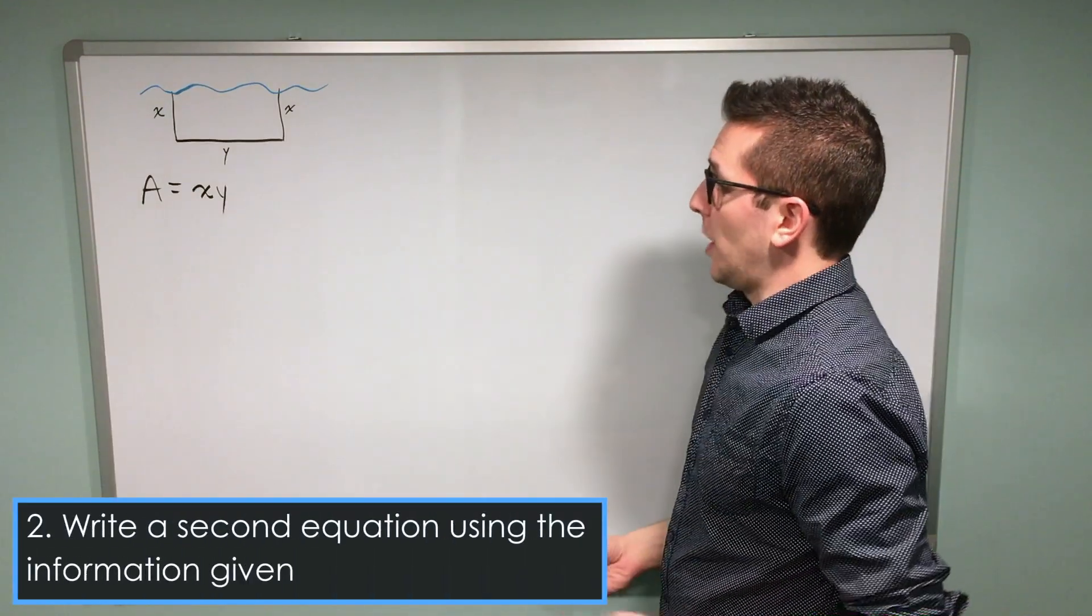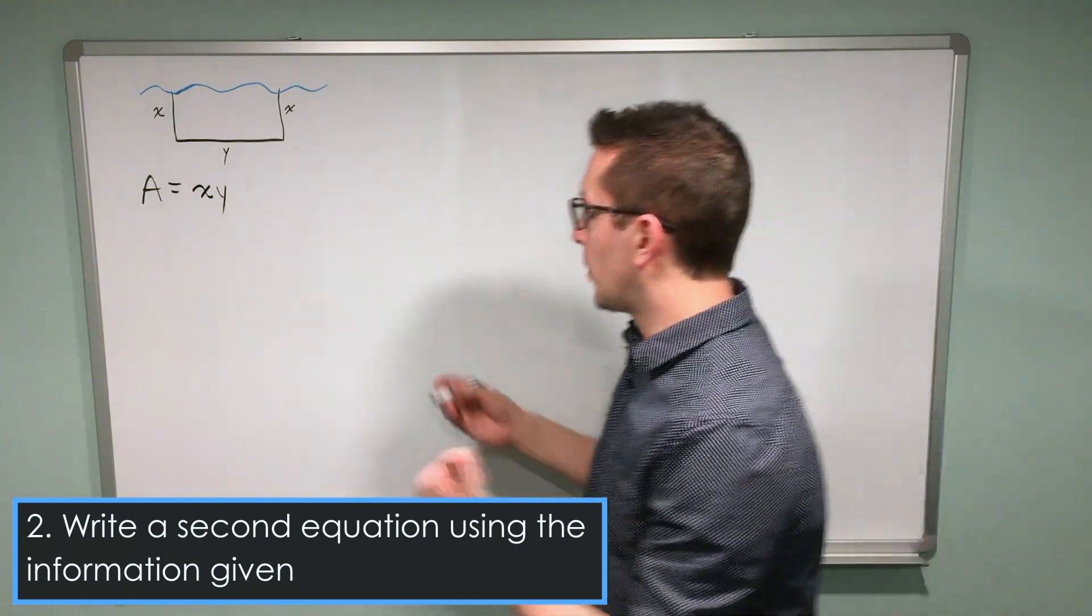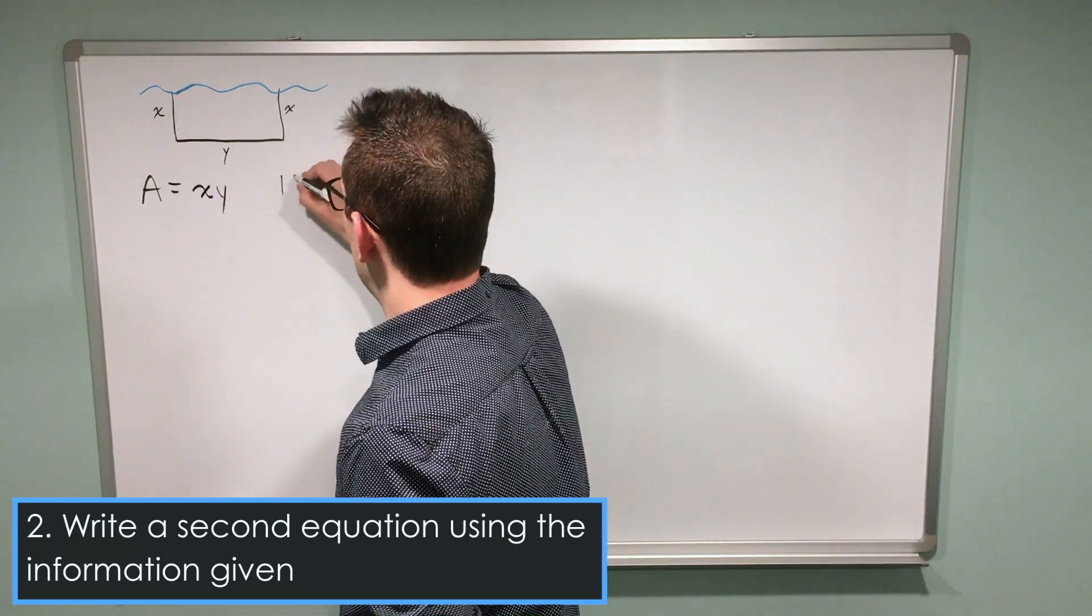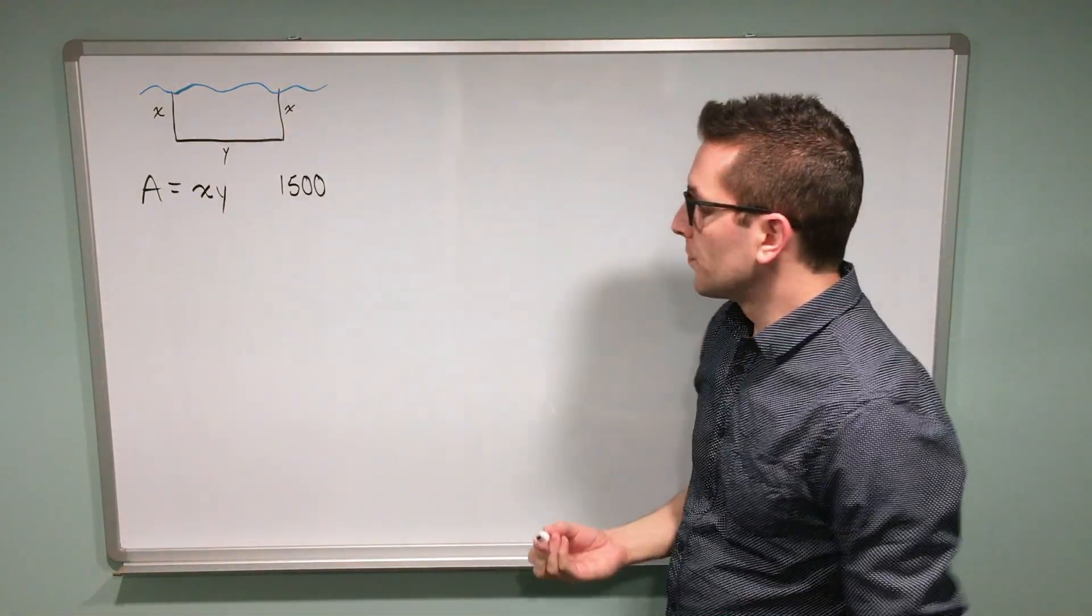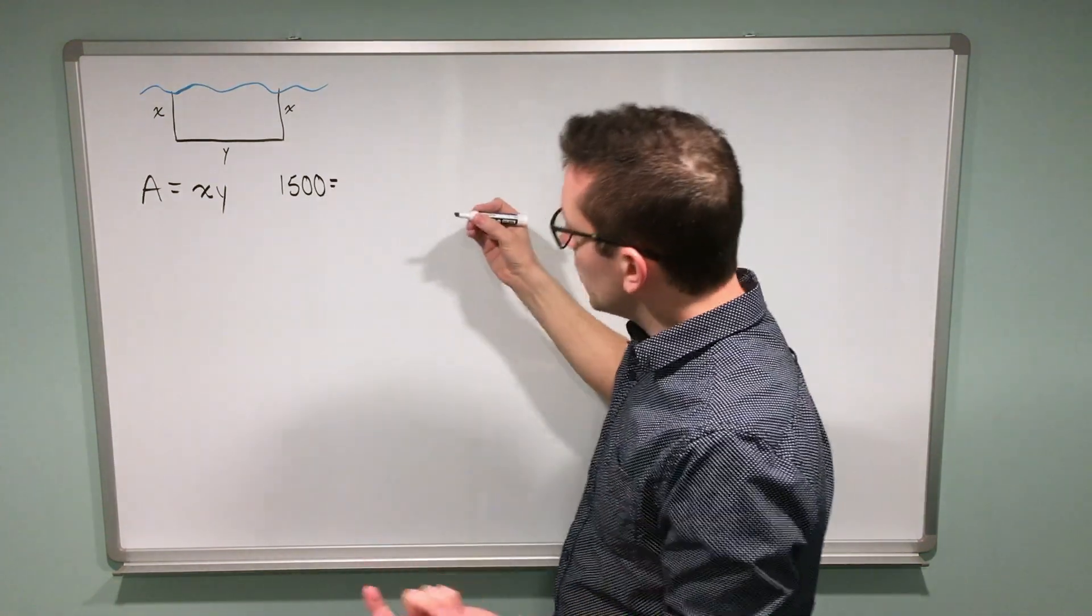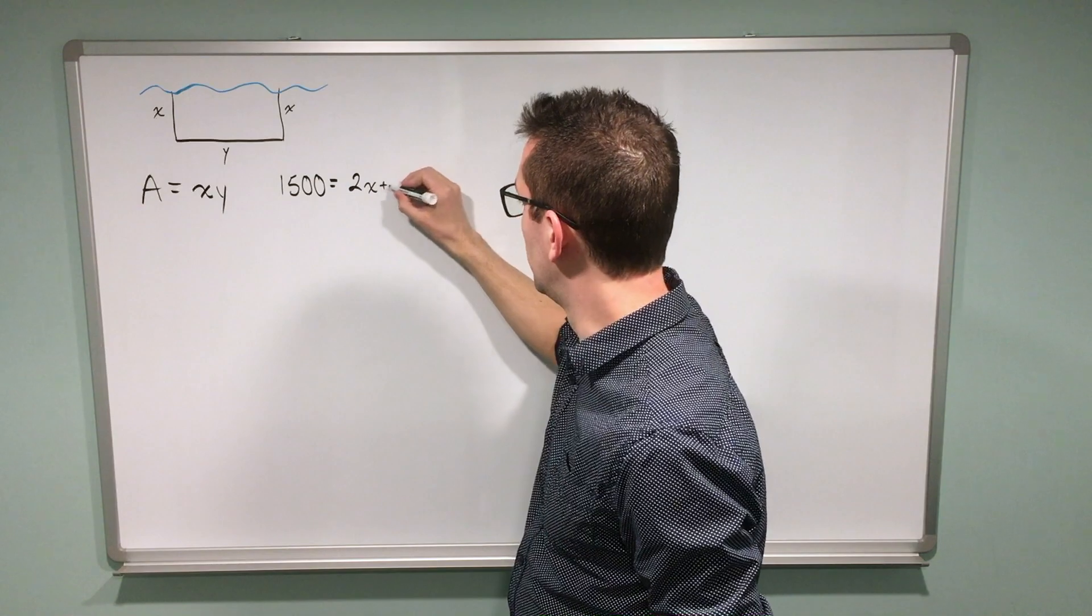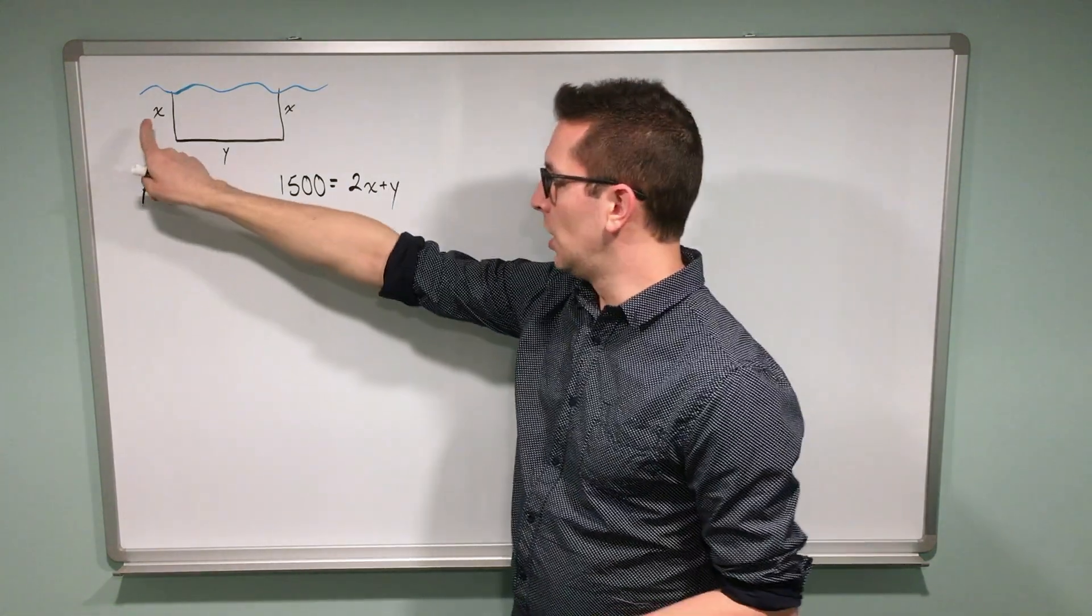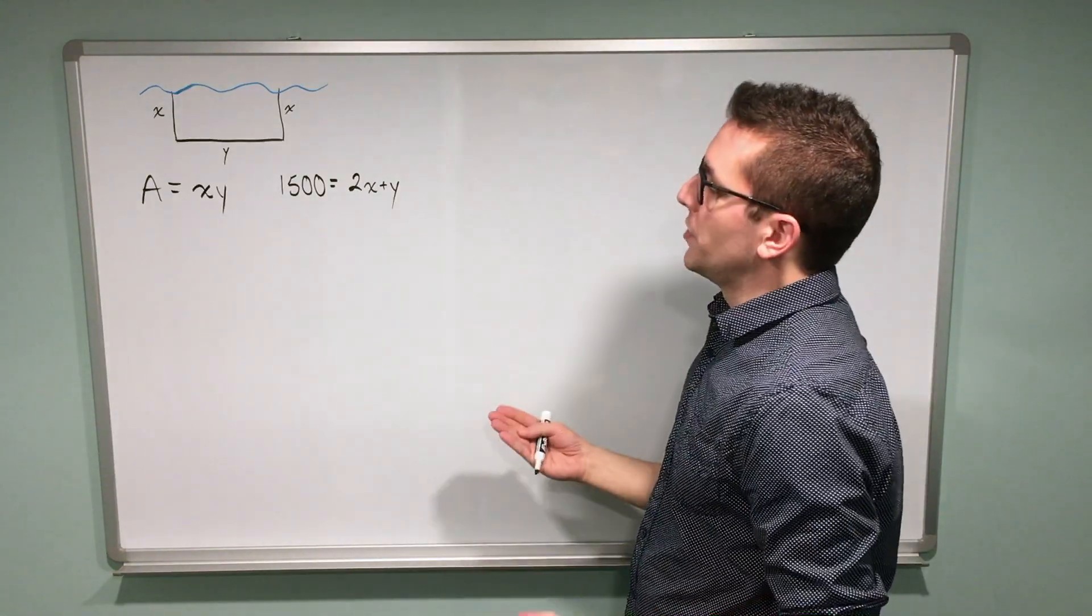So our second step is to write another equation using the given information from the problem. The problem tells us that we have 1500 meters of fencing, and we know that that's the perimeter of our rectangle. So I can say I have 1500 meters of fencing, and that's going to be equal to 2x plus y. In my diagram, I've got two widths and one length. So I now have two equations.